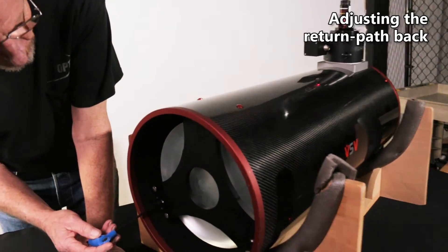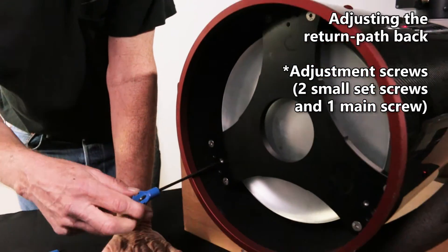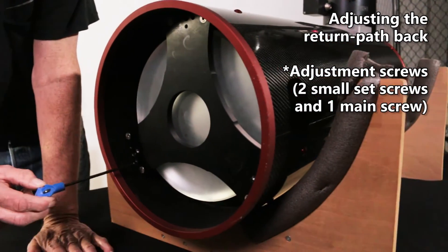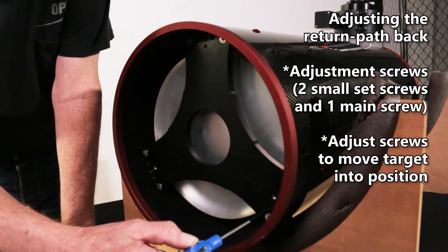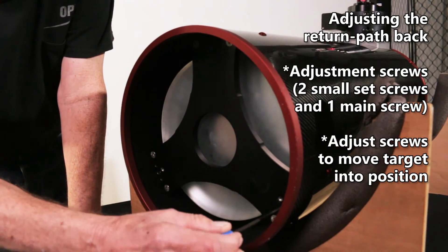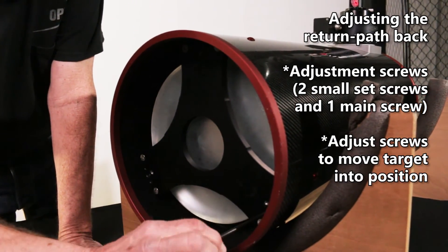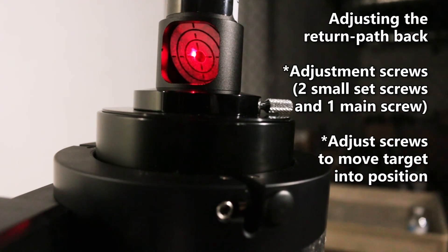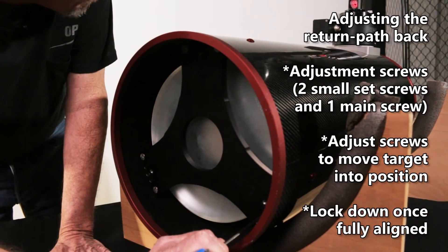In this particular situation, they actually have two adjustment screws, small set screws in here and one main screw. What you do is you loosen the main screw, make adjustments to the secondary set screws until you move the target into position. Once you do, you lock down the primary mirror.